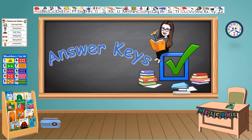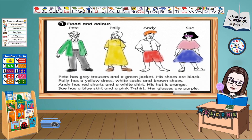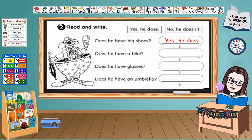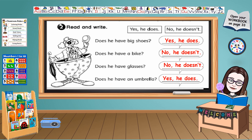Are you finished answering our workbook page 33? Let's check your answers. For the first part, read and color — make sure that you color it properly. For the last part: does he have big shoes? Yes, he does. Does he have a bike? No, he doesn't. Does he have glasses? No, he doesn't. Does he have an umbrella? Yes, he does.